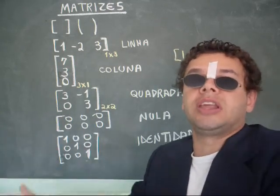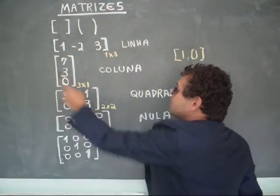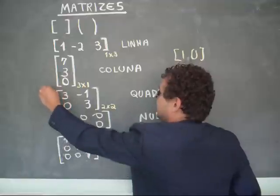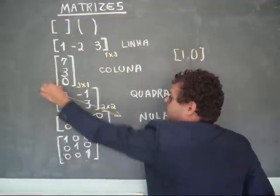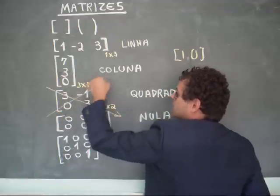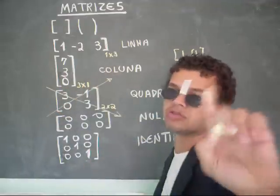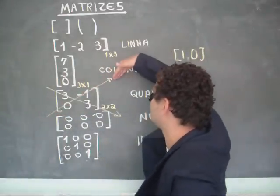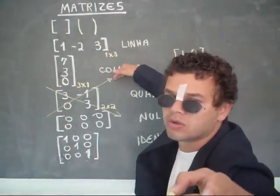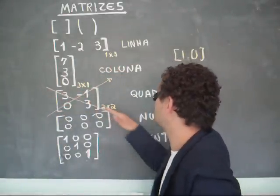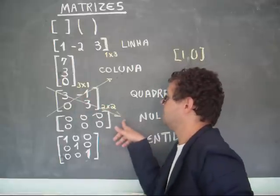Quatro linhas por quatro colunas, que seria ordem quatro. Toda matriz quadrada tem uma diagonal principal e uma diagonal secundária. Aqui é a diagonal secundária e aqui é a diagonal principal.